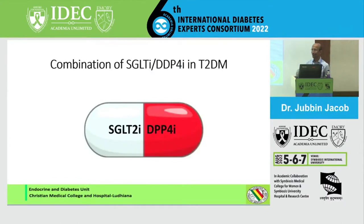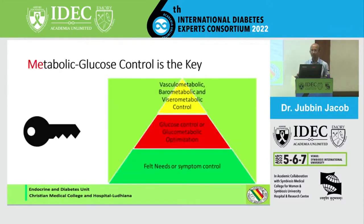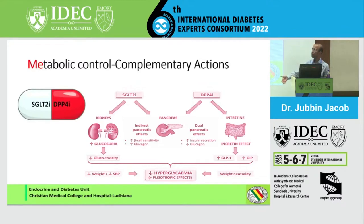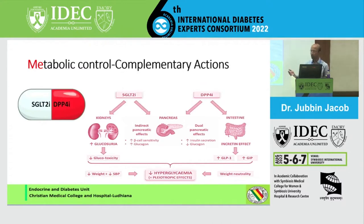The question is: it's a big pyramid with so many things on it. Can we achieve all this with a simple combination of an SGLT2 and DPP-4 inhibitor — is this the key? If we consider that glucose control is the key, this is a drug with extremely good glucose control. One reason is that it works on multiple pathophysiologies which underlie type 2 diabetes. It also has complementary effects — when you lose glucose in your urine, you get hyperglucagonemia as the body's response to calorie loss. DPP-4 inhibitors have direct action on alpha cells to reduce that hyperglucagonemia.